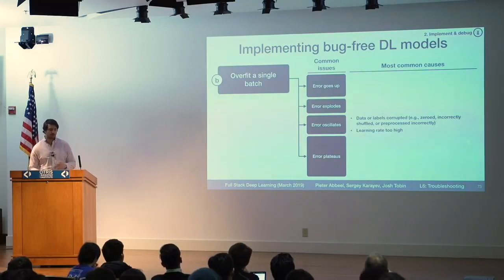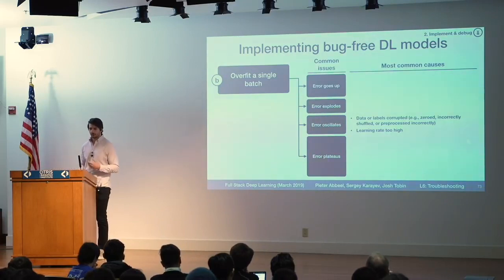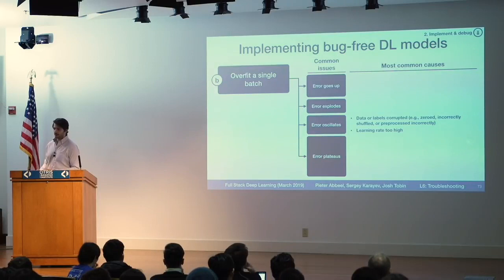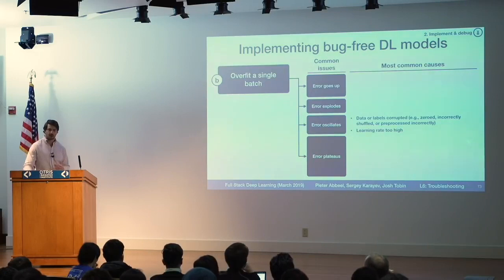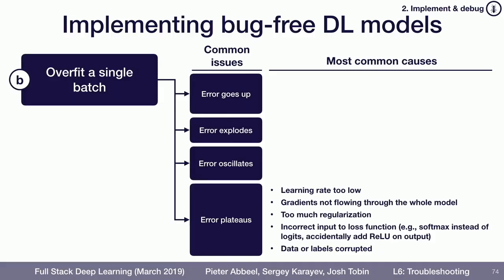If the error oscillates, the thing I would try first is just lower the learning rate — your learning rate might be too high. If that doesn't work, take a look at your data and make sure your labels are in the right order and your data is not being corrupted. If the error plateaus, try turning up the learning rate and making sure you've gotten rid of all your regularization, since over-regularizing is a common cause of not being able to overfit a single batch. If none of those things work, carefully look at your loss function and make sure it has the right inputs and is being computed correctly.